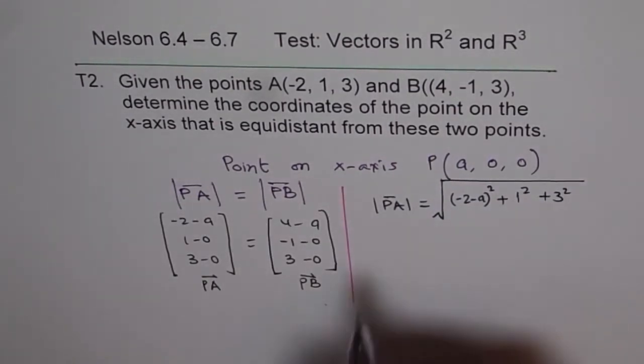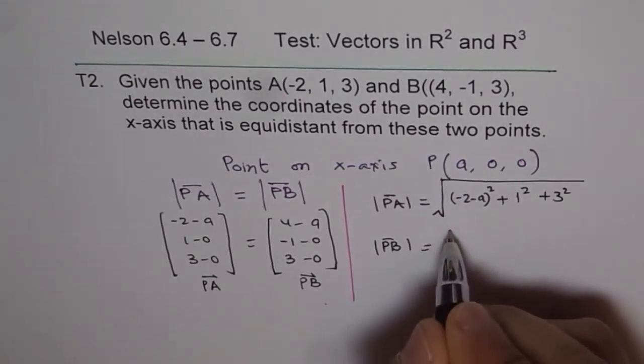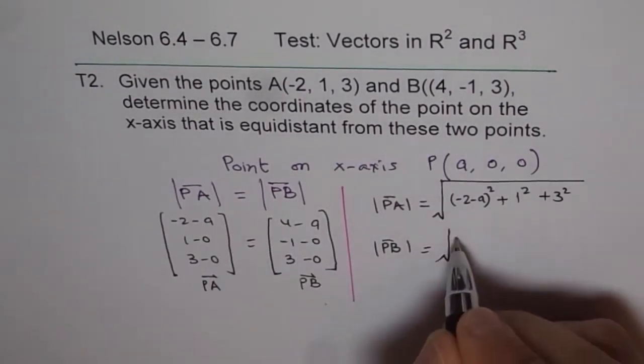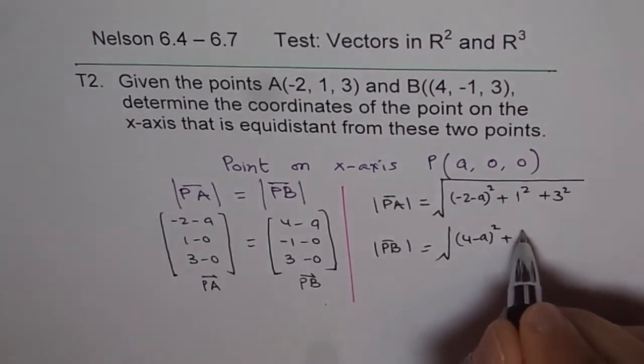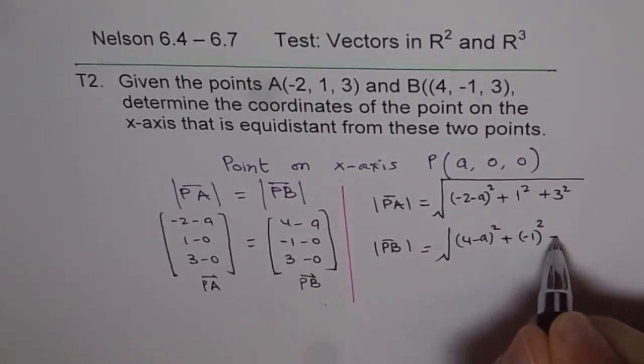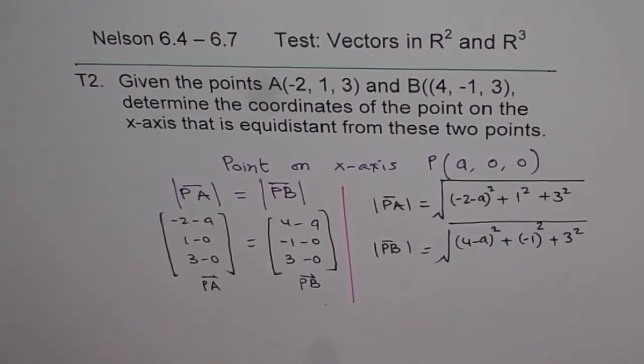And what is the magnitude of PB? Magnitude of PB is equal to square root of, 4 minus A whole square, plus minus 1 square, plus 3 square.